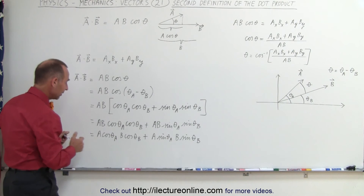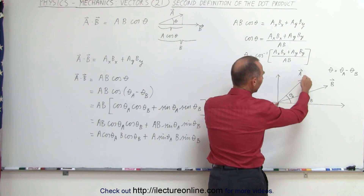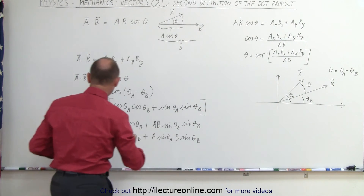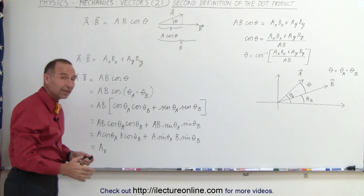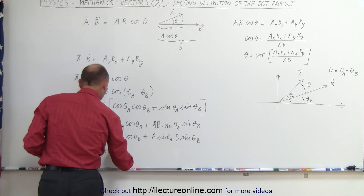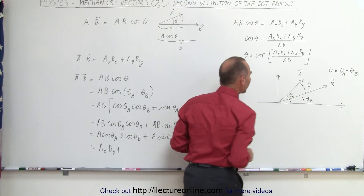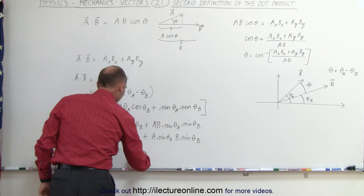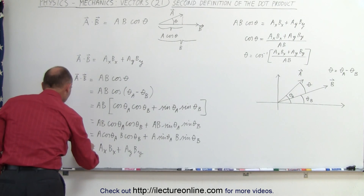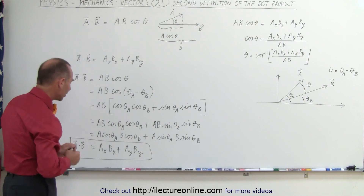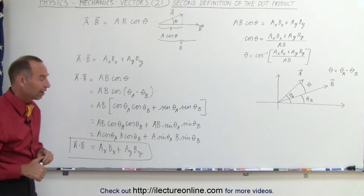Now, the magnitude of A times the cosine of theta A is simply the x component of A. So when we multiply this times the cosine of theta A, we get the x component of A, which is A sub X. Likewise, the magnitude of B times the cosine of theta B is the x component of B. So this is A sub X times B sub X. Plus, A times the sine of theta sub A is the y component projected onto the y axis — that is A sub Y — and B times the sine of theta sub B is the y component of B, B sub Y. Therefore, the dot product A dot B can also be defined as the product of the x components plus the product of the y components. In three dimensions, you also get plus the product of the z components.